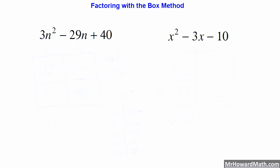Hello and welcome to this video. We're going to look at factoring with the box method, and this will be an introduction to this method. We will cover a basic example to start with, and then a more complicated example. The advantages of the box method are that it will work with any trinomial you're trying to factor, no matter how complicated it gets. It will also work when you have trinomials with multiple variables, like X and Y, or M and N. But in this first video we're just going to look at a single variable trinomial.